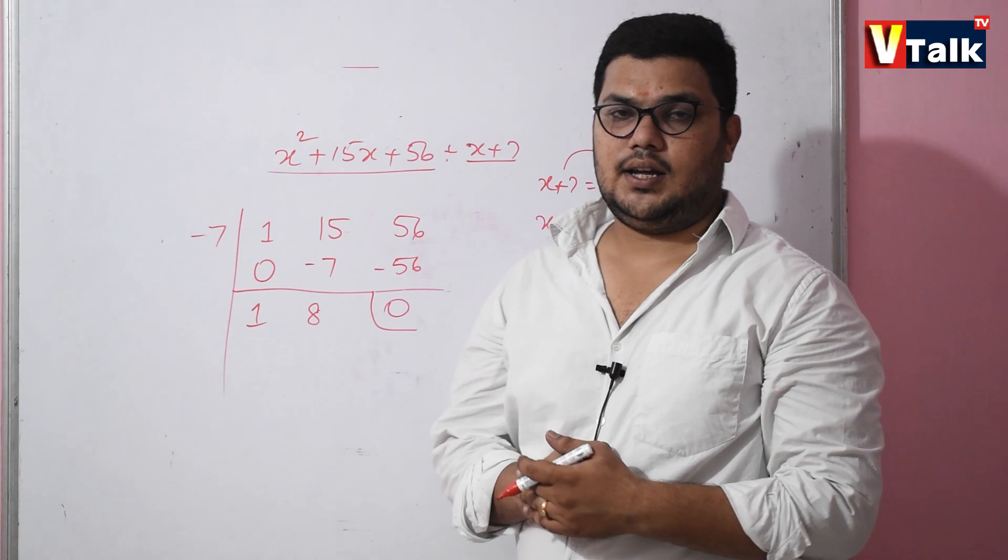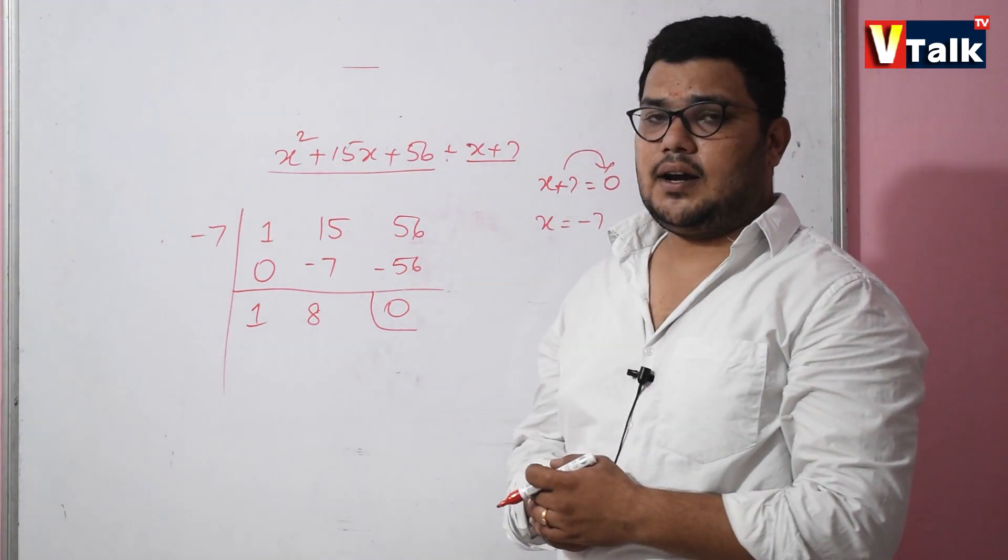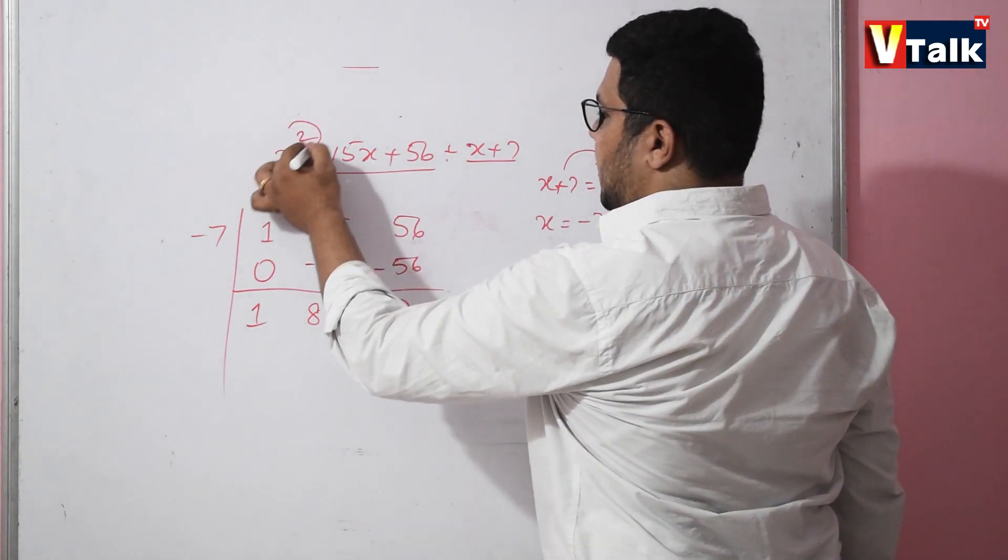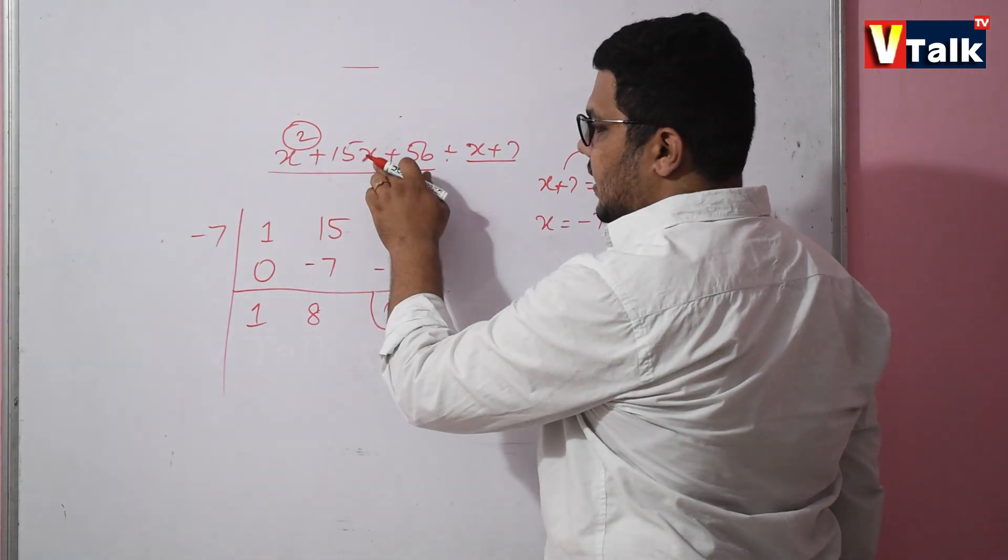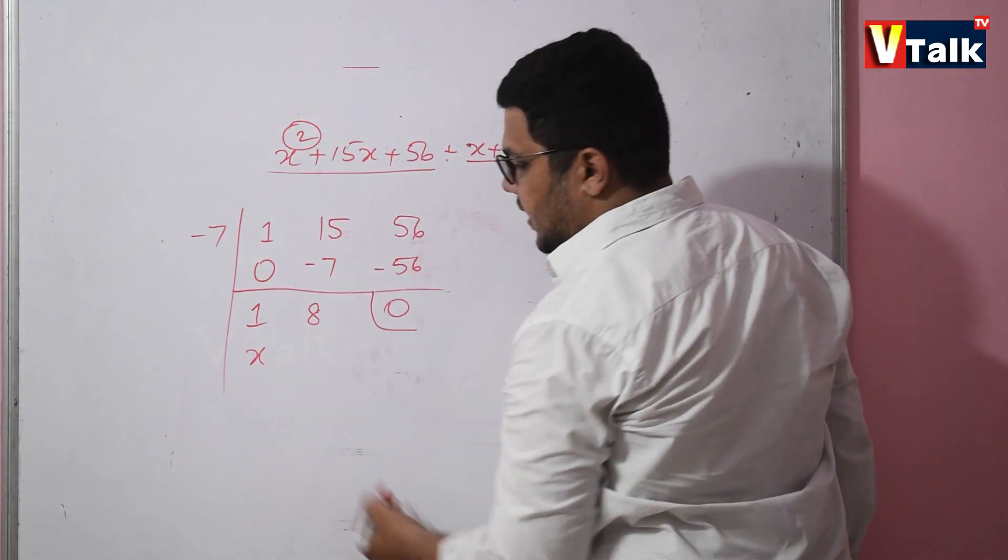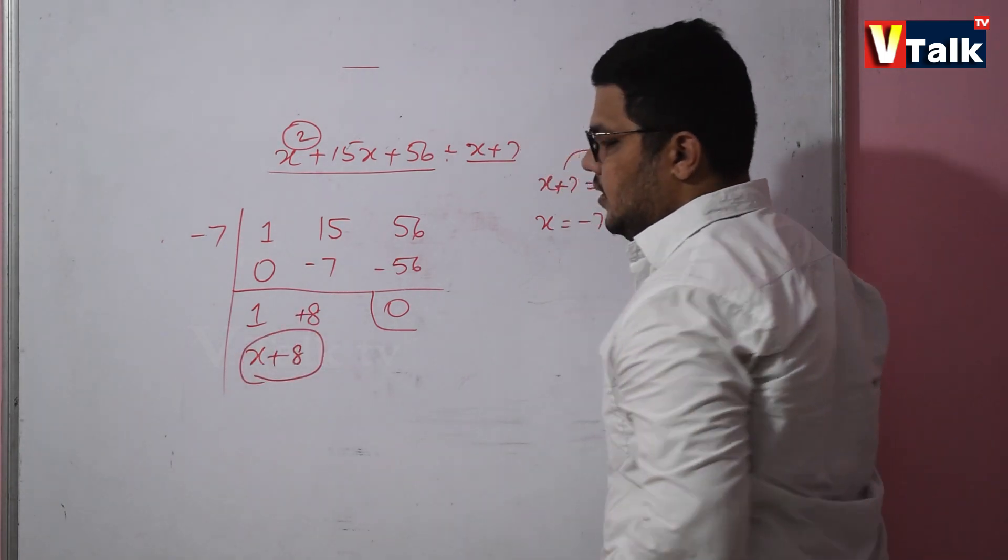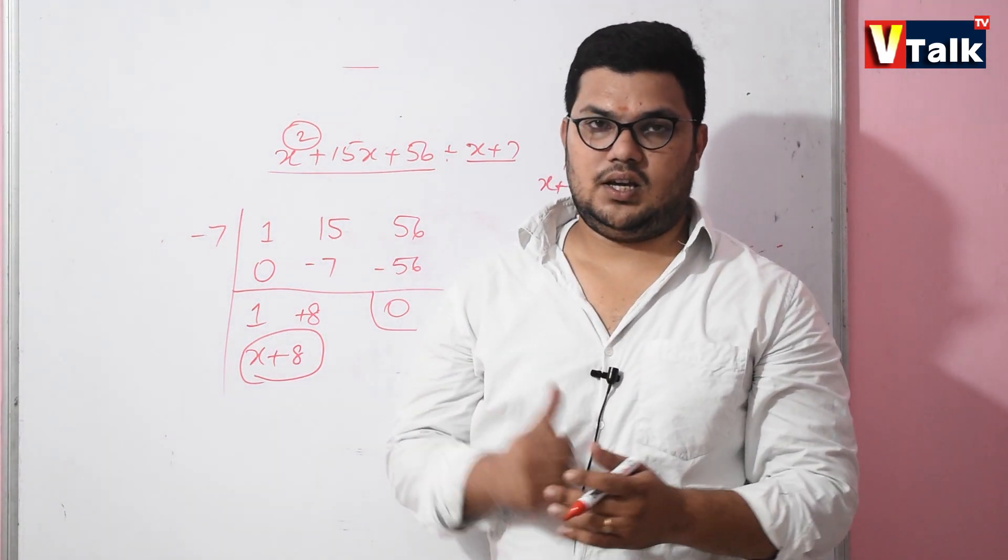The remainder is 0 and the quotient is here. We will write variables in the same way. The first term is x, so this becomes x. And plus 8. So x plus 8 is the quotient. I will show you another example in this video.